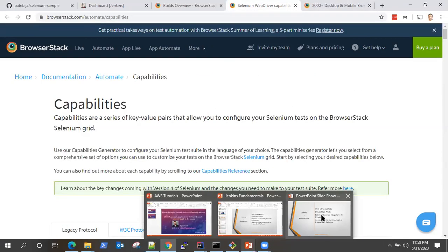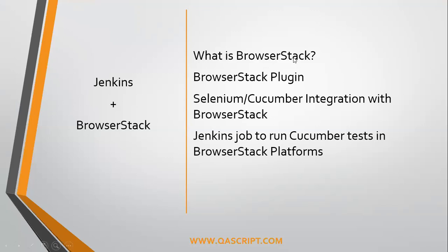Let's get back to Jenkins and BrowserStack. Why do we need this? In your continuous delivery pipeline, you need to run integration tests on a number of devices and integrate that with Jenkins. When Jenkins triggers a build and your tests start running on different operating systems or devices, you can connect to your BrowserStack account using a plugin. Jenkins has a BrowserStack plugin through which you can easily integrate BrowserStack with Jenkins. We are also going to see how we can integrate our Selenium Cucumber tests with BrowserStack and then create a Jenkins job to run those Cucumber tests on the BrowserStack platform.